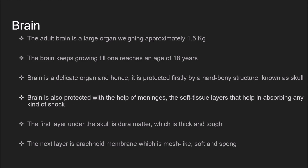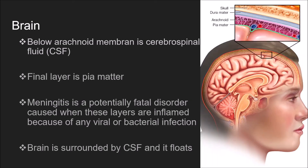The brain is also protected with the help of meninges — soft tissue layers that help in absorbing any kind of shock. The first layer under the skull is the dura mater, which is thick and tough. The next layer is the arachnoid membrane, which is mesh-like, soft and spongy. Below the arachnoid membrane is cerebrospinal fluid, or CSF, and the final layer is the pia mater, which is a soft tissue layer. Meningitis is a potentially fatal disorder caused when these layers are inflamed due to a viral or bacterial infection. The brain is surrounded by CSF and floats within it.